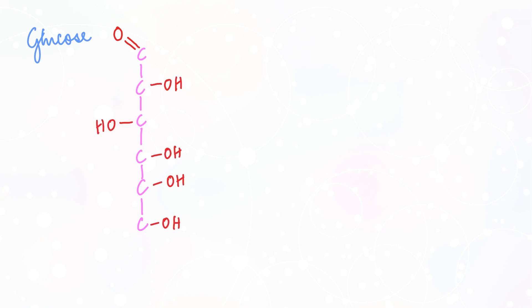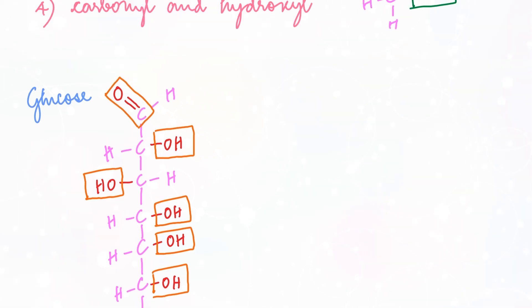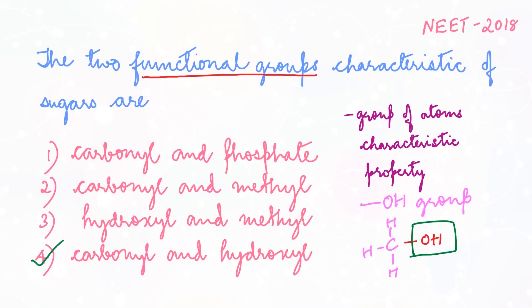Let's consider one of the common sugars — the glucose molecule. This is the structure: a carbon backbone with six carbons, a C double bond O on the first carbon, and many OH groups attached to the remaining carbons. As you can see there's a carbonyl group and there are hydroxyl groups. These two groups together form the functional groups of sugars. So the answer is option 4: carbonyl and hydroxyl.